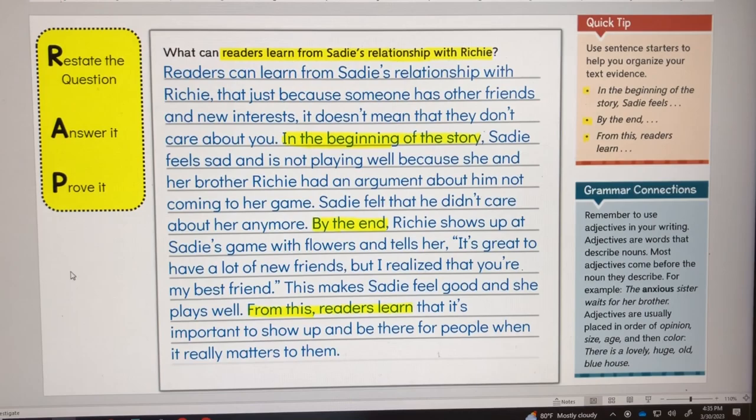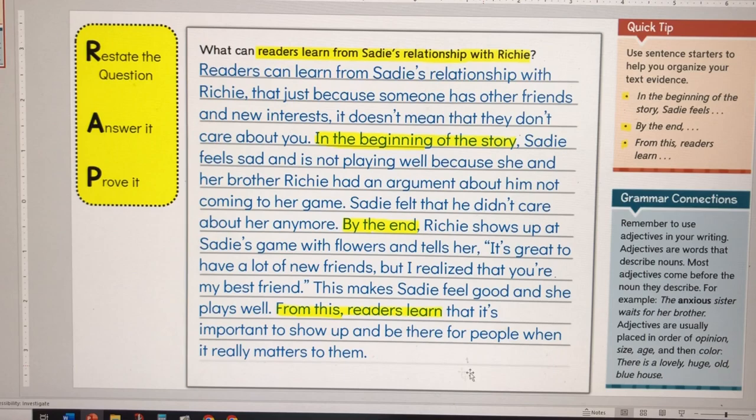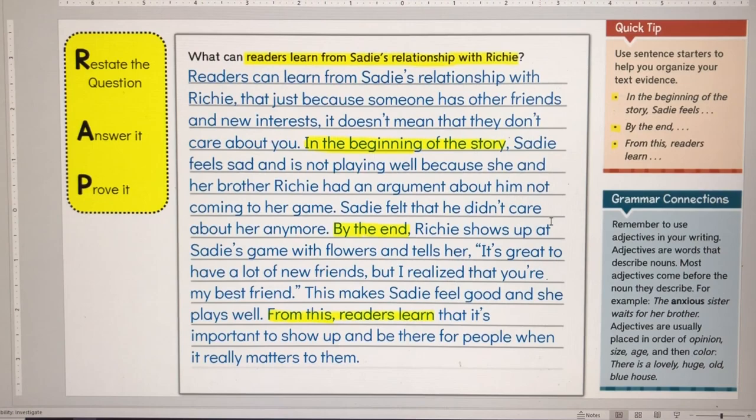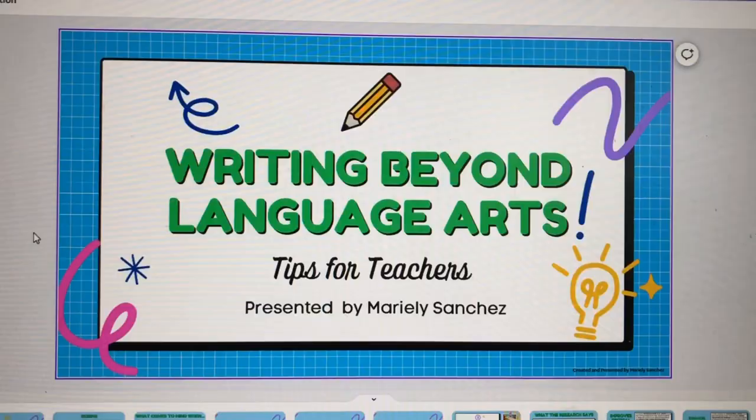I also want to show you the respond-to-reading question we worked on together — about Sadie's relationship with her brother Richie and what we can learn from it. We had sentence starters and reviewed our RAP strategy, building the answer together. This was a good model because students will do the same thing tomorrow with the other story, 'Mama, I'll Give You the World.'